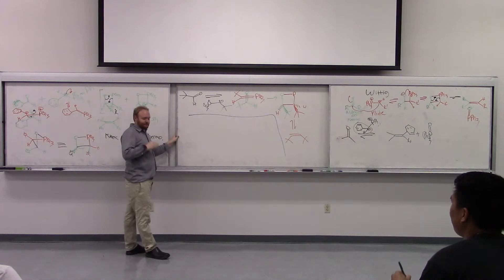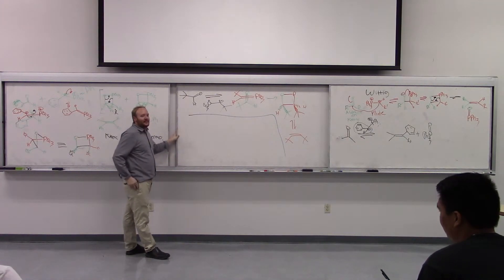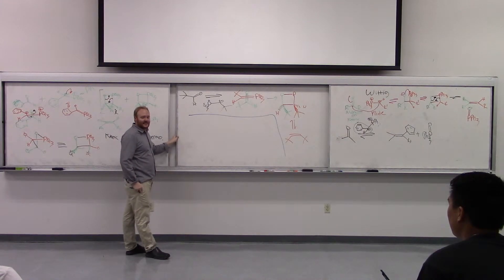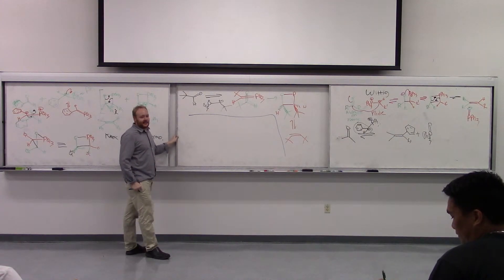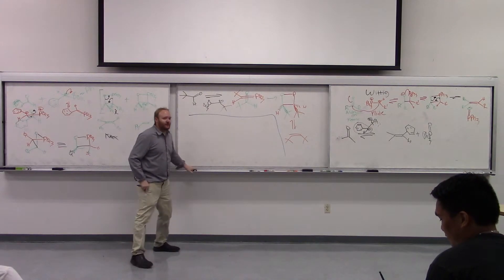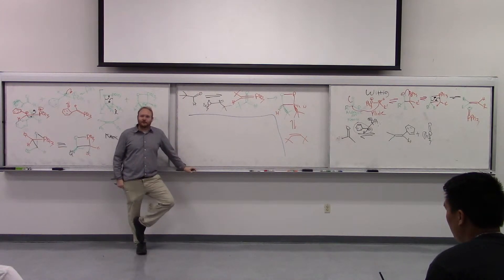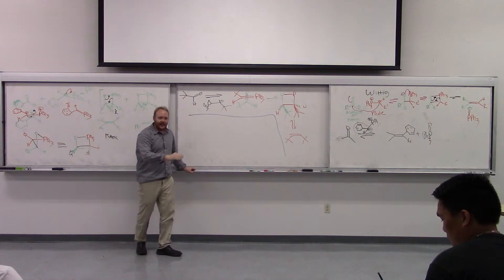But I haven't said electron withdrawing group. So what do you think electron withdrawing groups are going to give us? They're going to give us trans. They're going to give us the thermodynamic product. Does anyone want to guess why we get the thermodynamic product? Let me draw the transition state and then we'll see if anyone guesses.